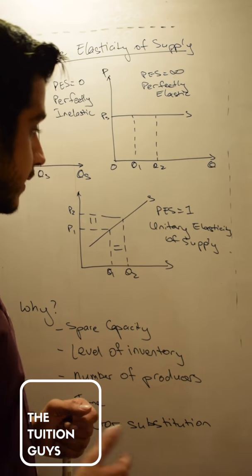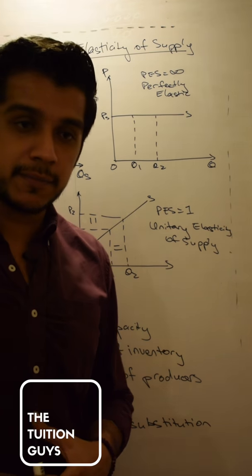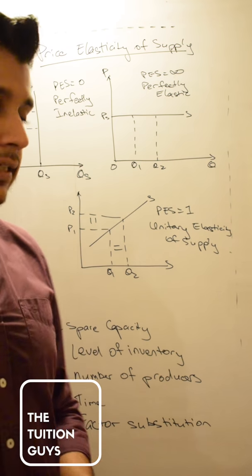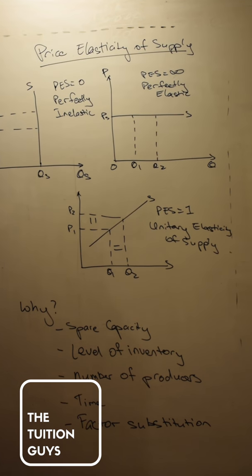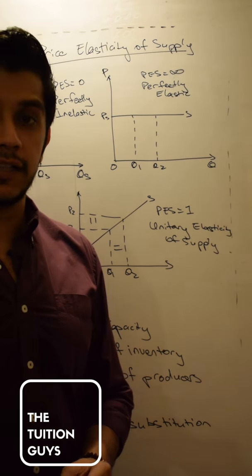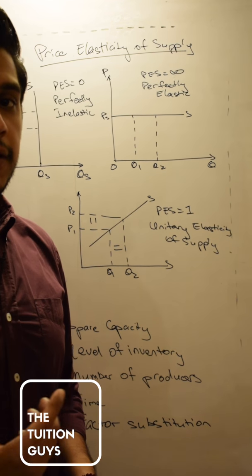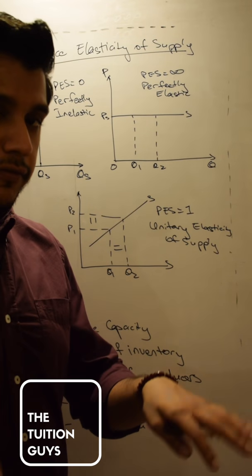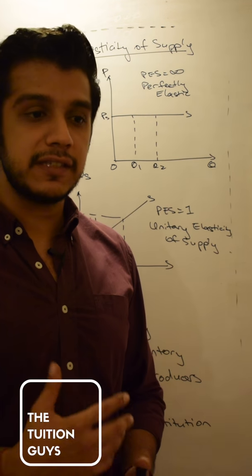But why might this happen? Why might some supplies be elastic and some be inelastic? The determinants of that might be, firstly, spare capacity. To what extent is the producer able to make more of something in a certain amount of time? What spare capacity means is: does the producer have the ability to up quantity supplied if needed at that very instant?